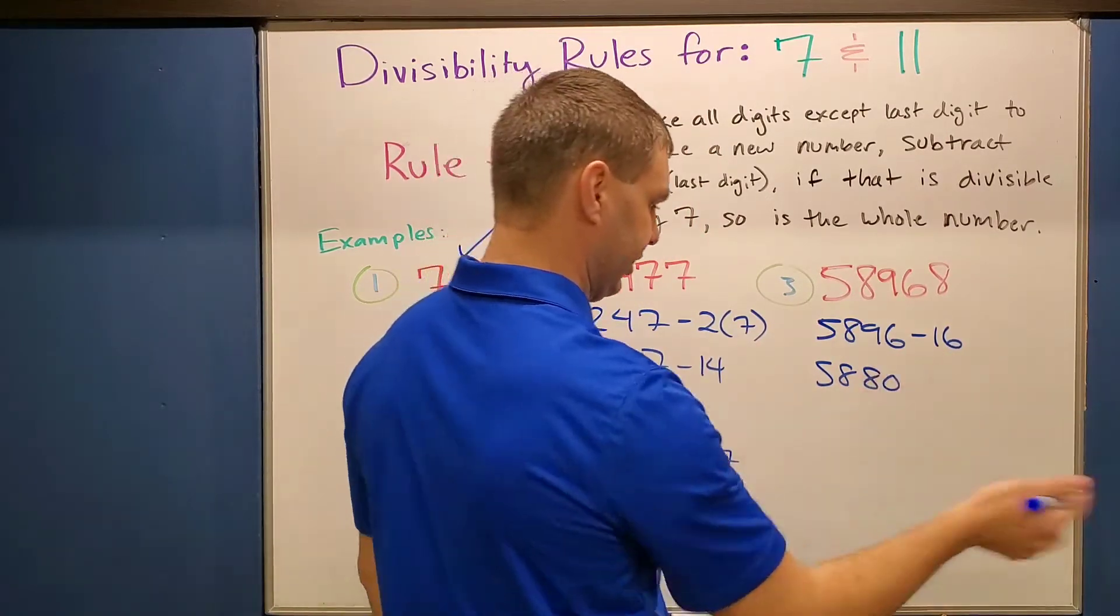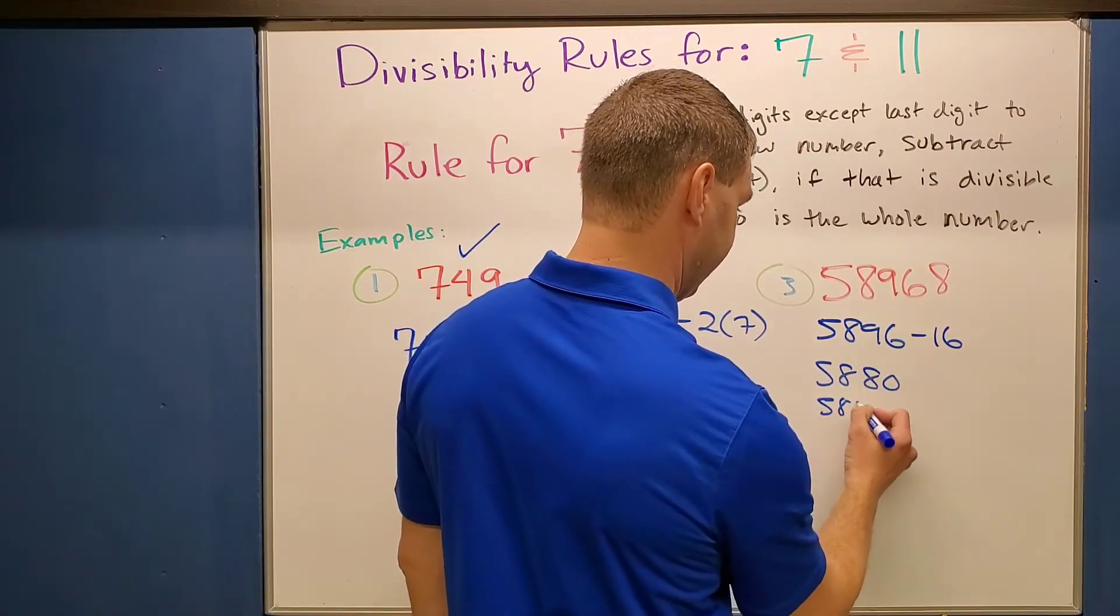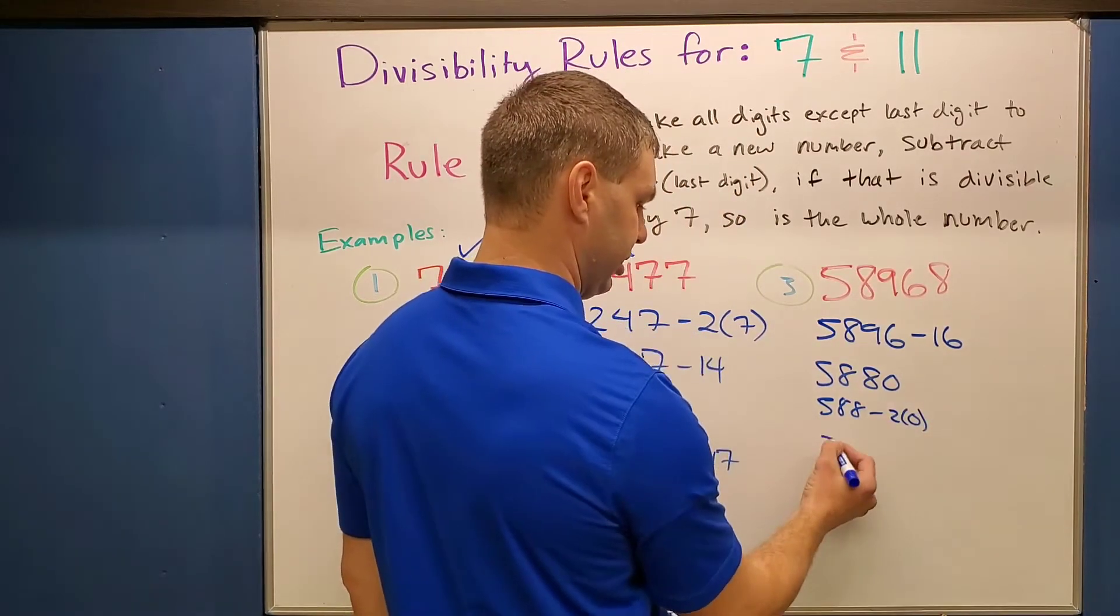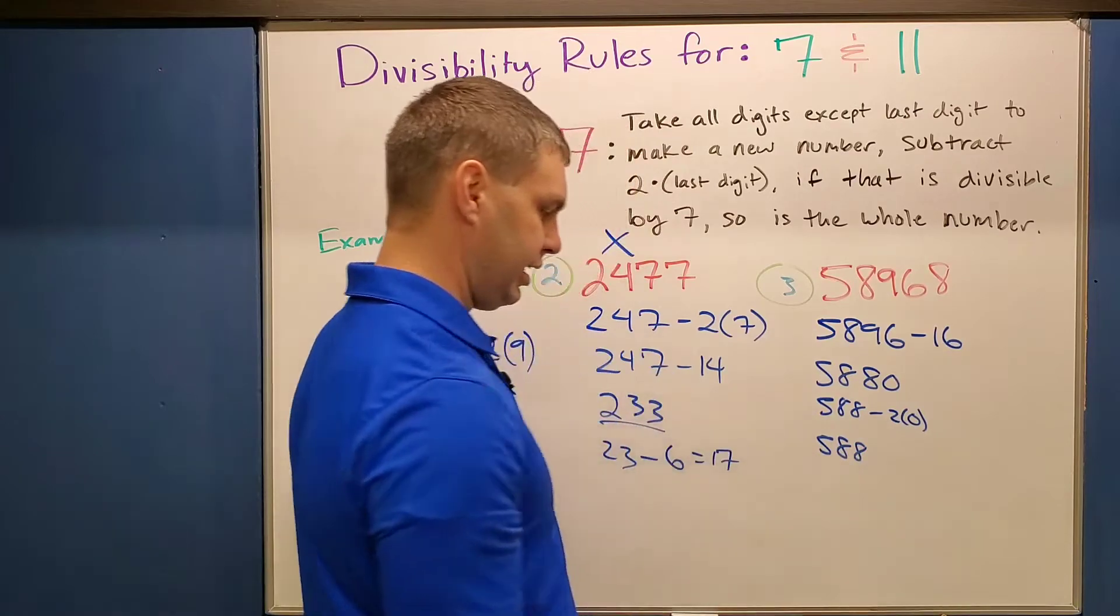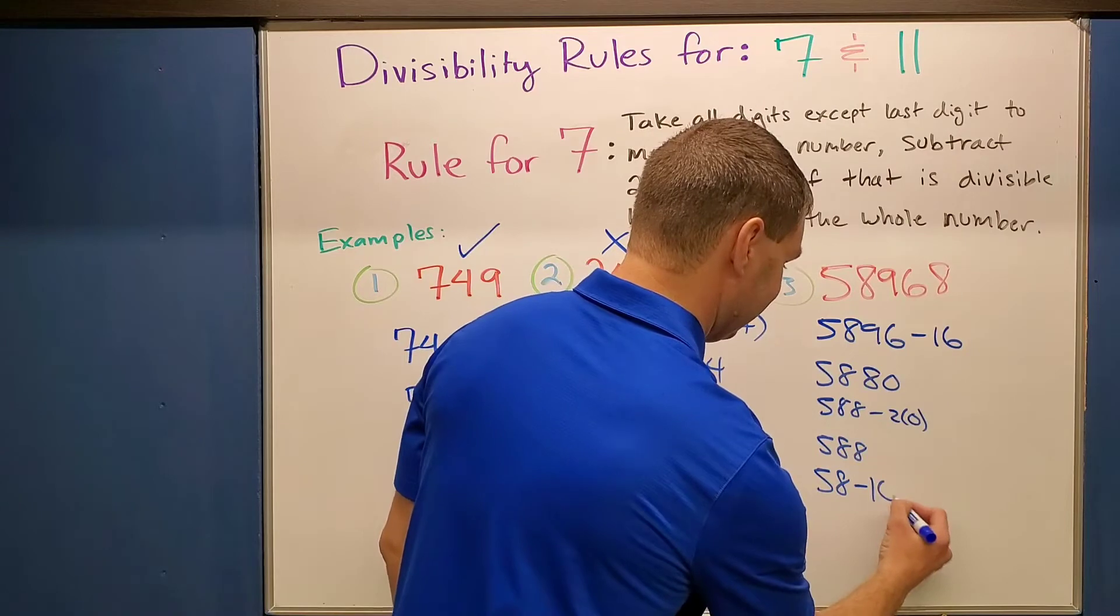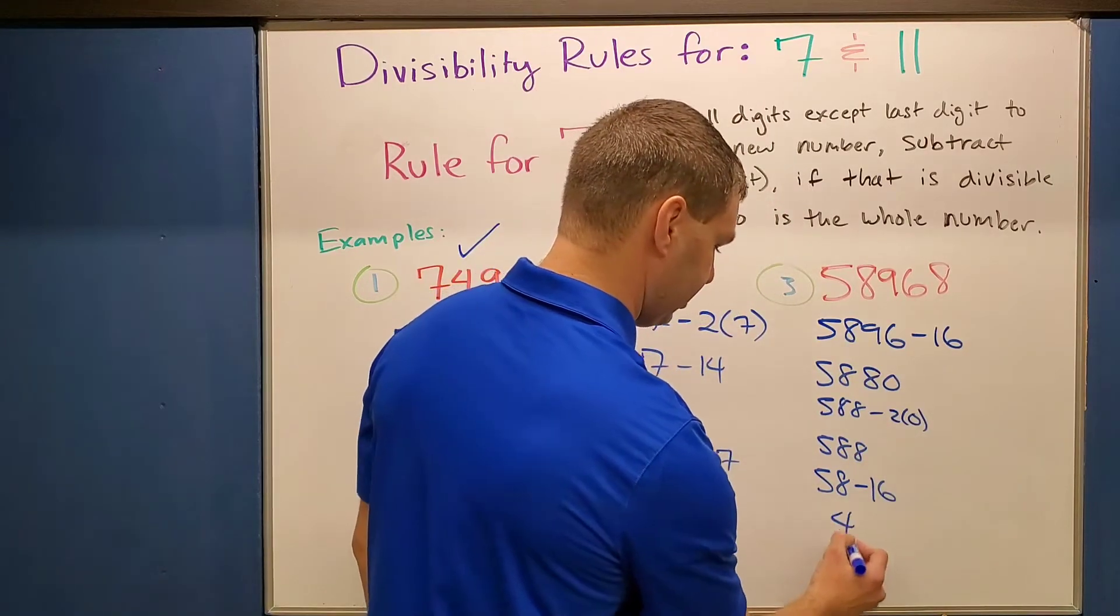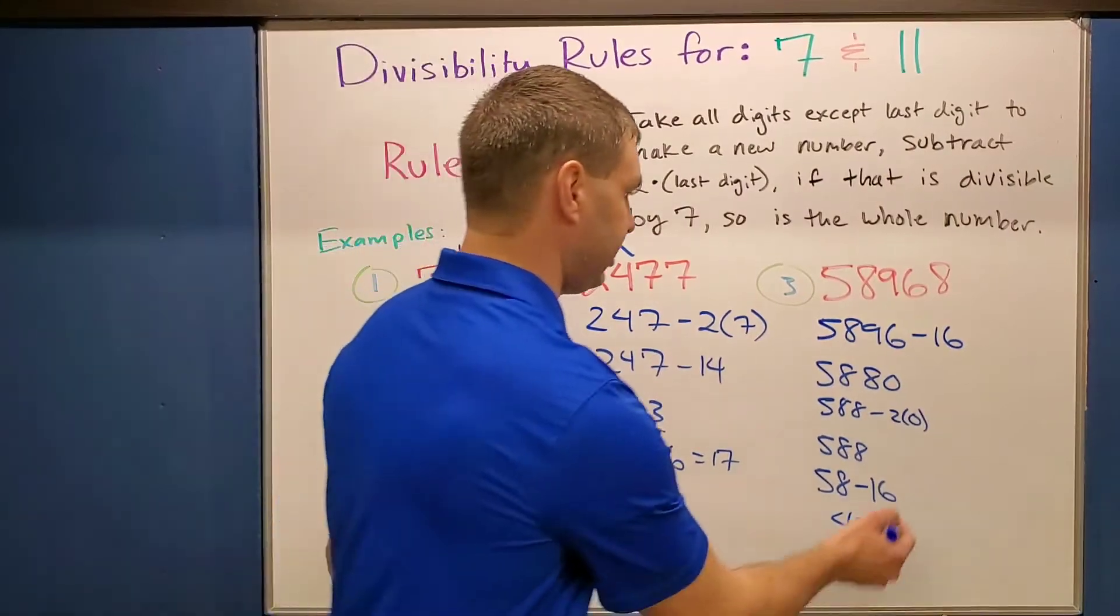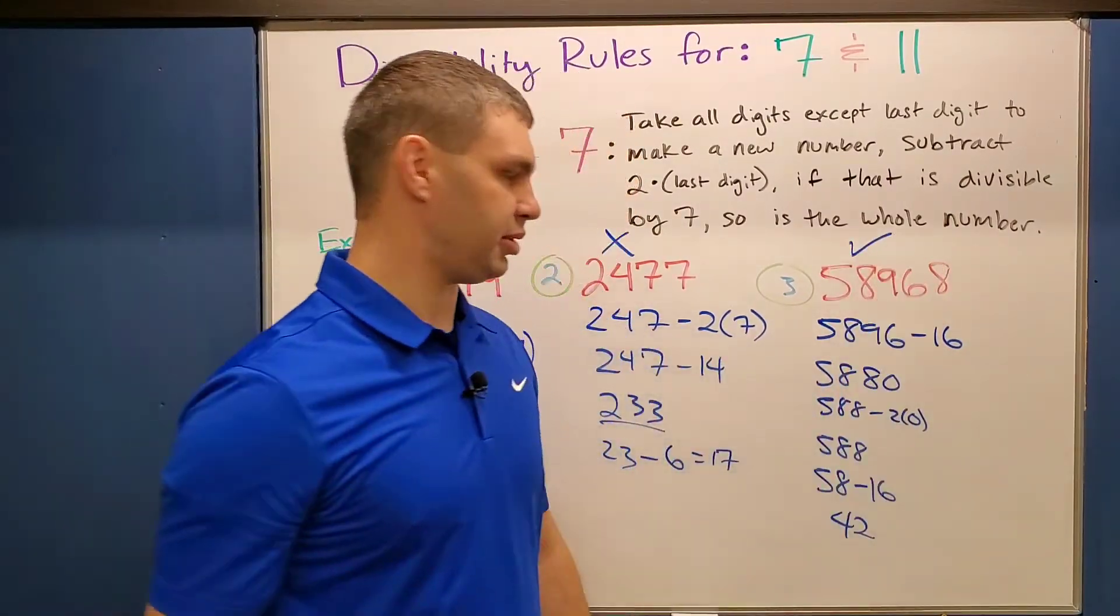And then whenever it ends in a 0, you kind of get a free step here. It's going to be 5, 8, 8 minus 2 times 0. So that's not going to change this number at all. It's still 588. And then try it one more time. Still not quite sure if this would work yet. So it's going to be 58 minus 16. 58 minus 16, of course, is 42. Is 42 divisible by 7? Absolutely it is. So this will also be divisible by 7.